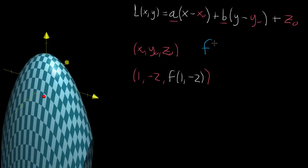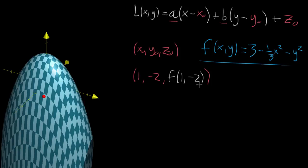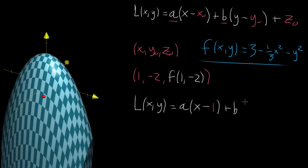The function we're using for this graph is f(x, y) = 3 minus one-third x squared minus y squared. You evaluate it at that point and this gives you the point in three-dimensional space that the tangent plane has to pass through. So our linear function L(x, y) has to pass through one and negative two, giving us: some constant A times (x minus 1), plus constant B times (y minus negative two), plus f(1, -2).